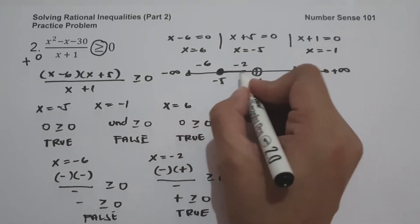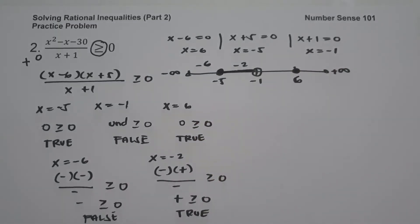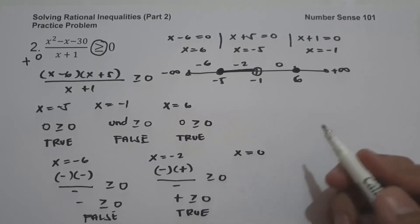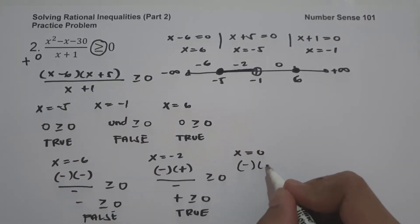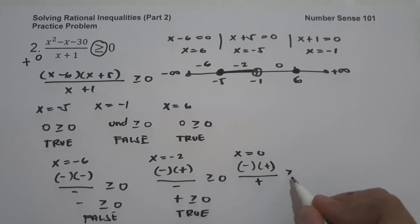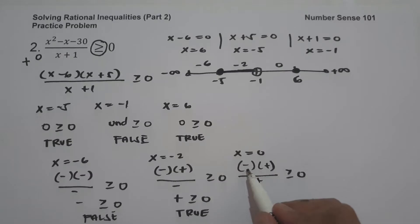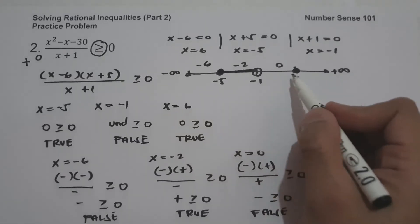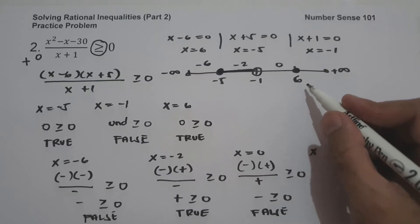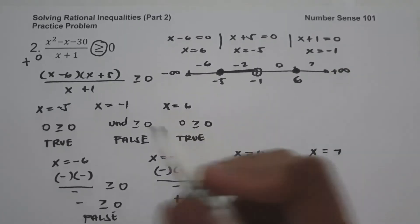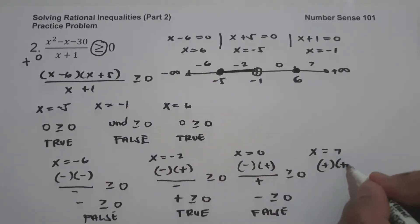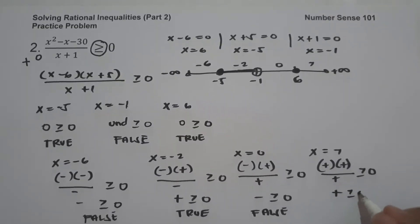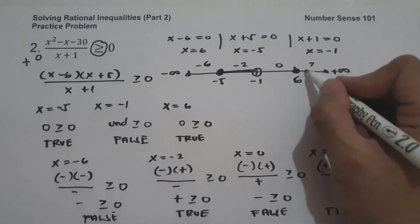I'm going to shade that part to indicate it's included in our solution. For a number between negative 1 and 6, say x equals 0: (0 − 6) is negative, (0 + 5) is positive, and (0 + 1) is positive. Negative times positive divided by positive is negative — so this is false. I'm not going to shade this region. For a number greater than 6, say x equals 7: (7 − 6) is positive, (7 + 5) is positive, and (7 + 1) is positive — giving positive greater than or equal to 0, so this is true. I'm going to shade this region.